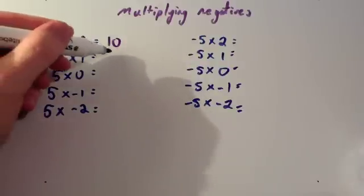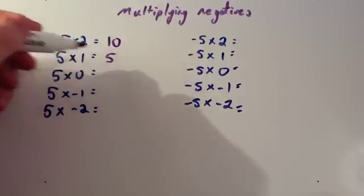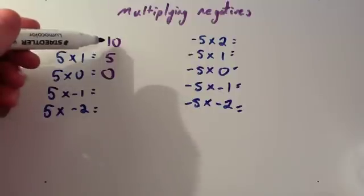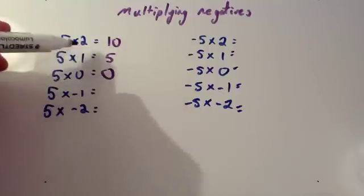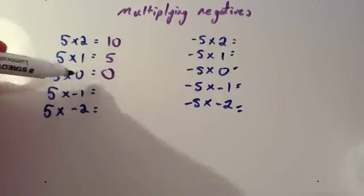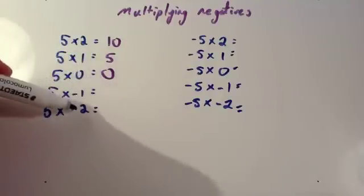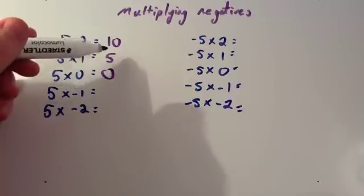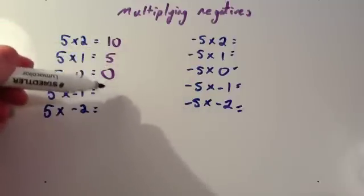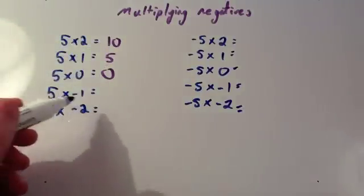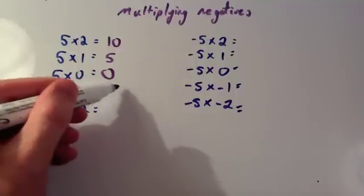5 times 1 is 5, and 5 times 0 is 0. Now look what's happened to our answers: 10, 5, 0. I'm just doing 5 times 2, 1, 0, minus 1, minus 2. Looking at the pattern, you can see it's getting smaller — you're taking away 5 each time — so the answer here will be minus 5. 5 times minus 1, well, that's minus 5.